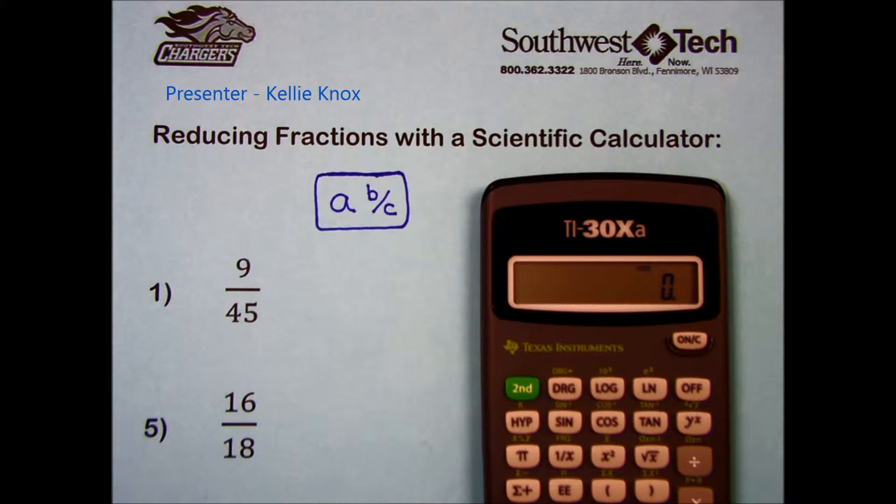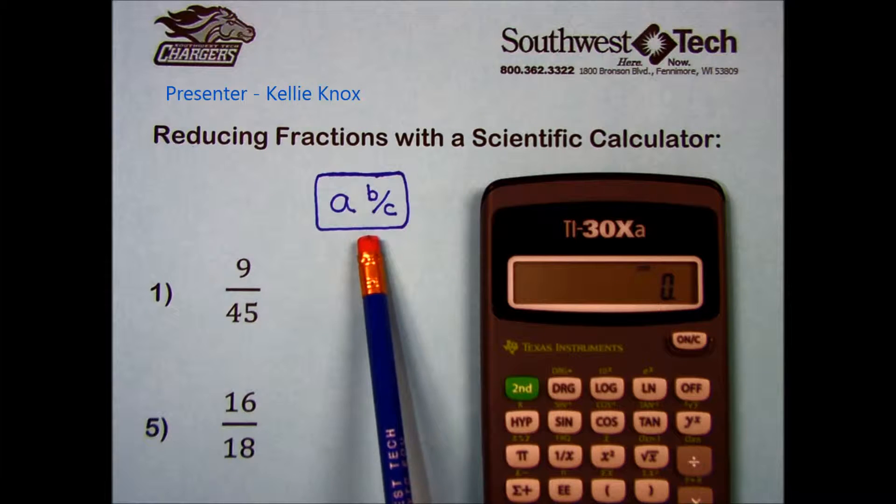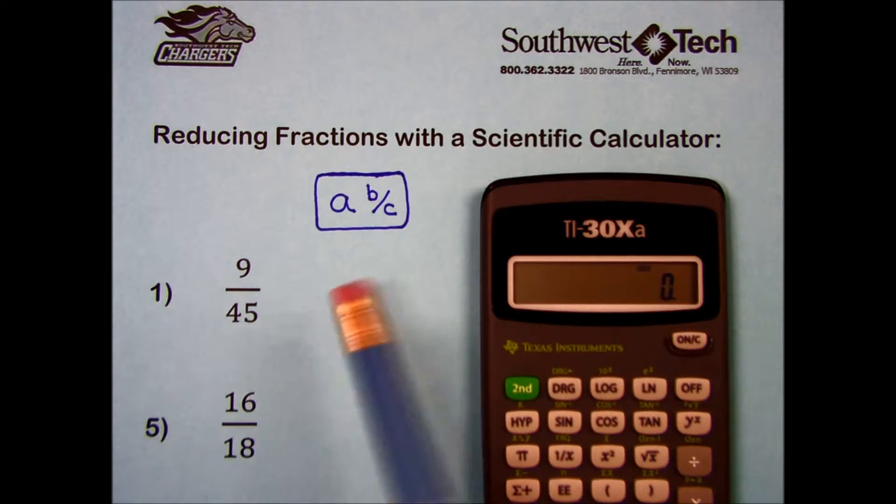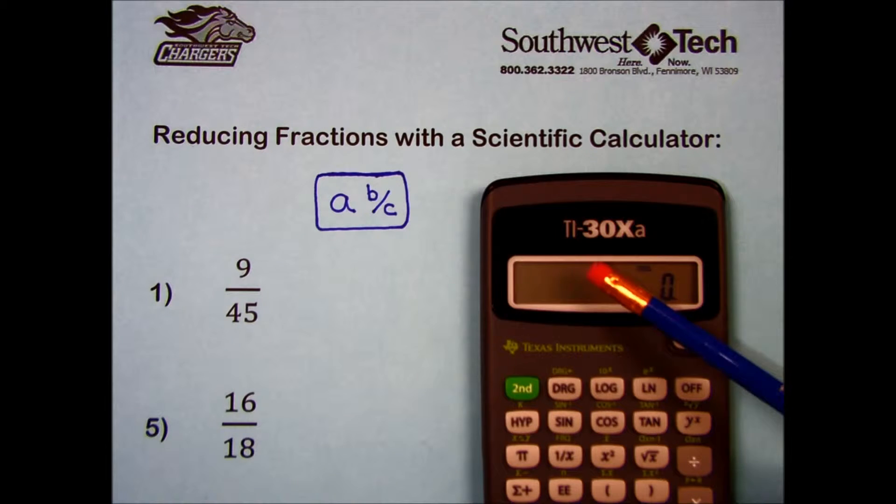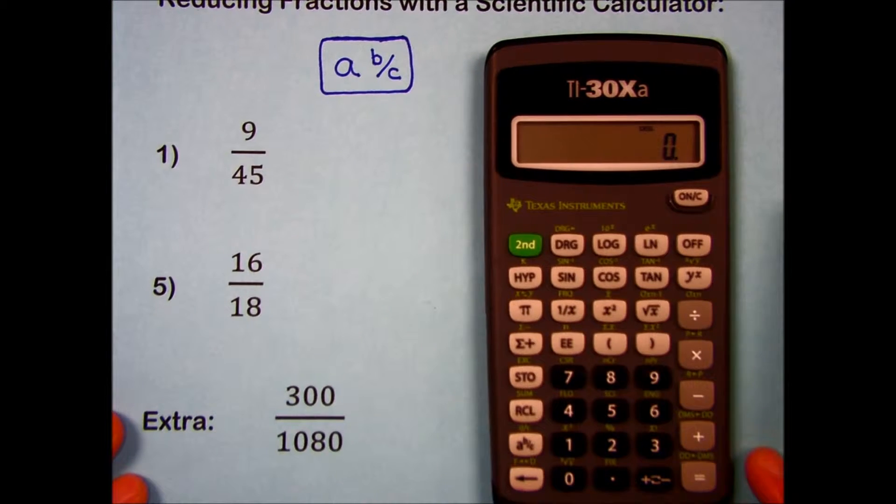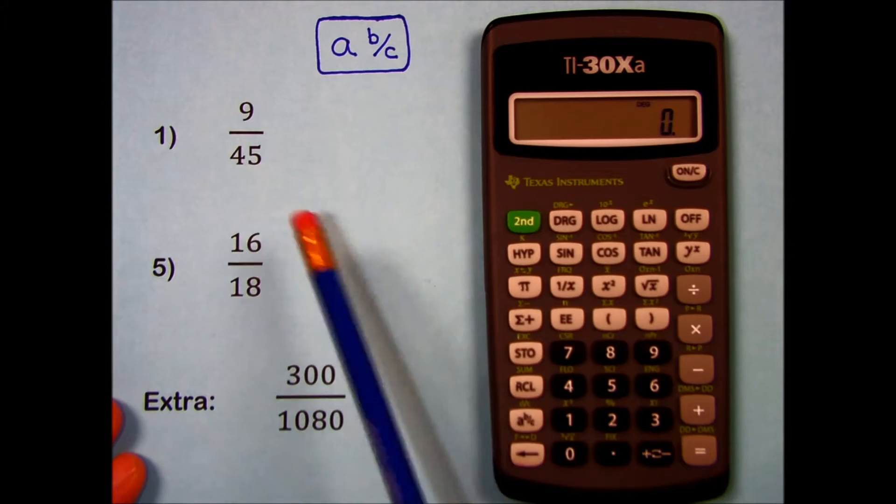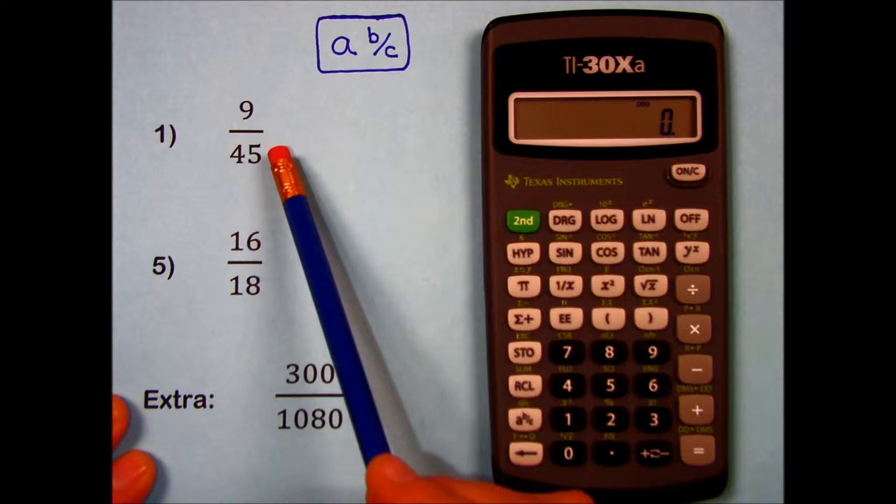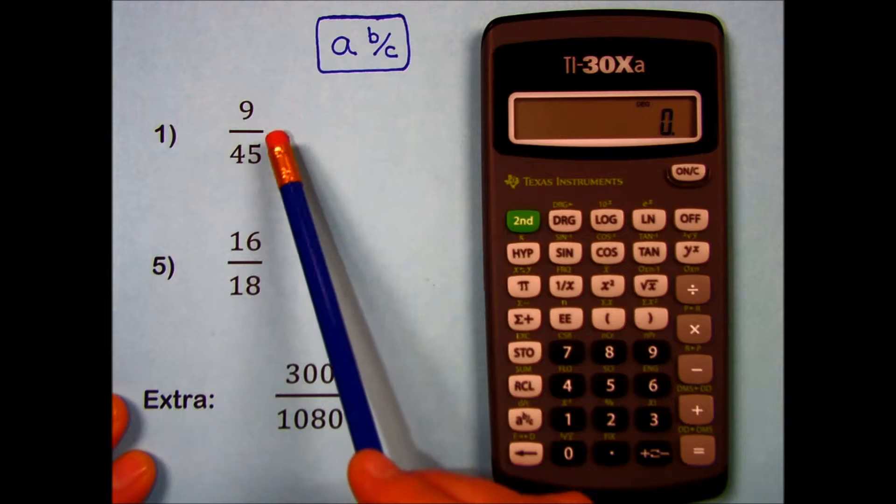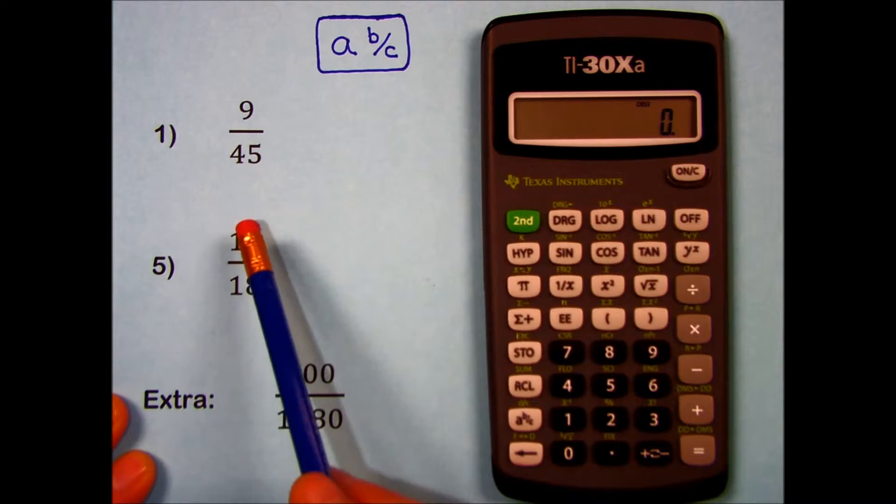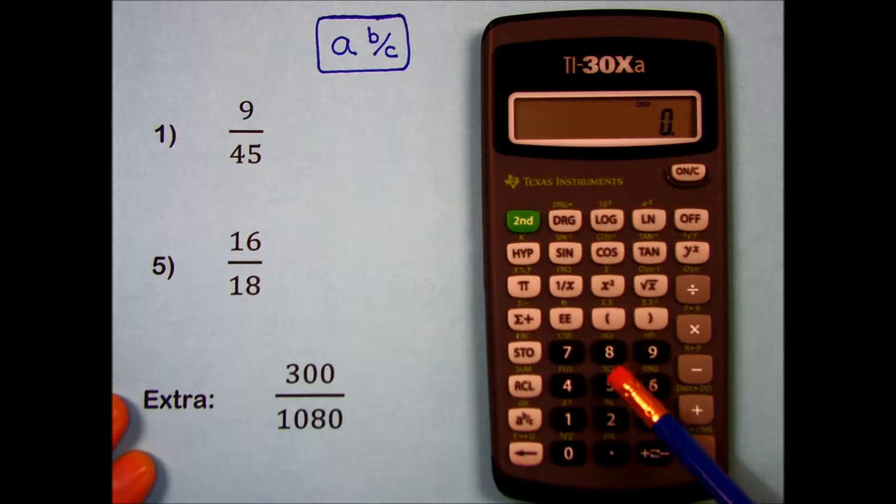A scientific calculator with a fraction key can be a great help when reducing fractions to lowest terms. I'm going to start with the TI-30XA with a single line display. Let's try number 1, 9/45. Usually, we would have to figure out what number can be divided into each of the numerator and the denominator, but the scientific calculator will do that for us.